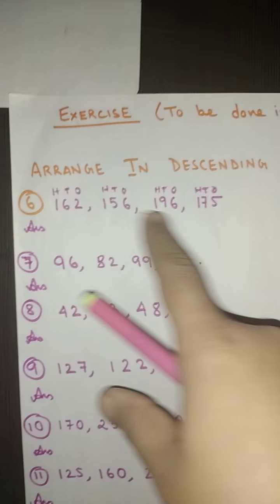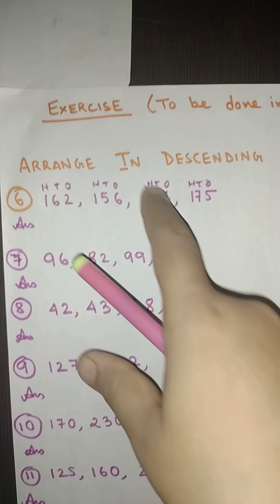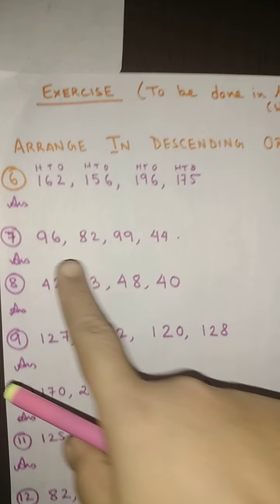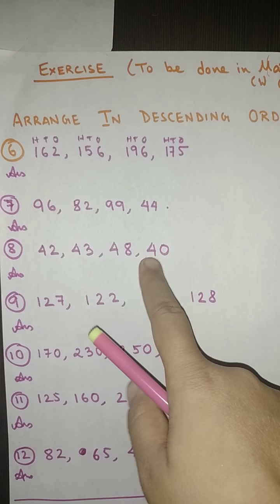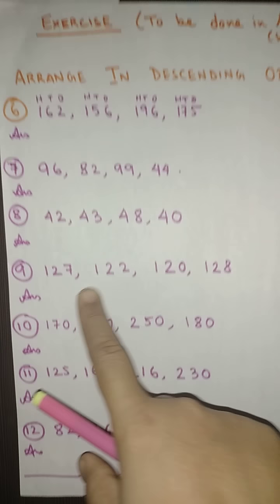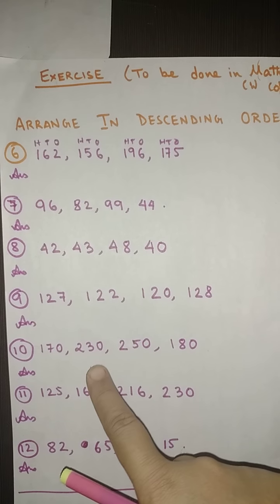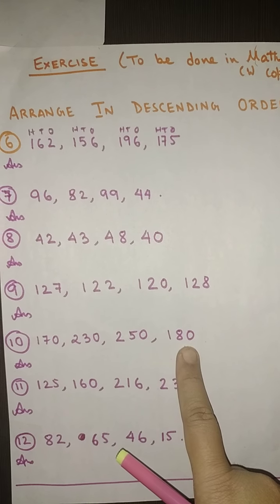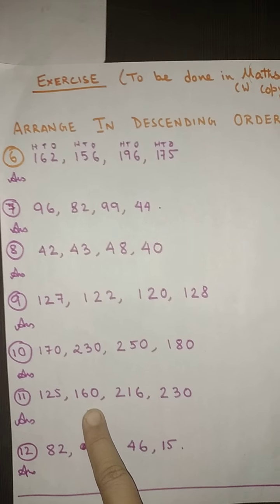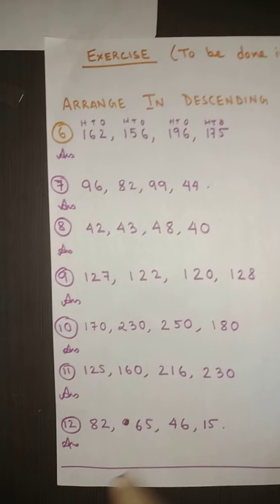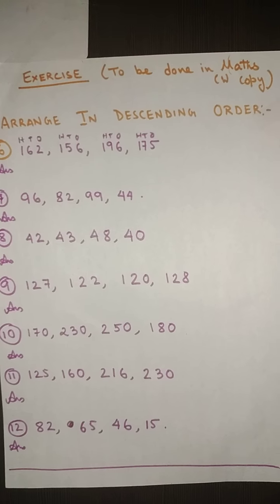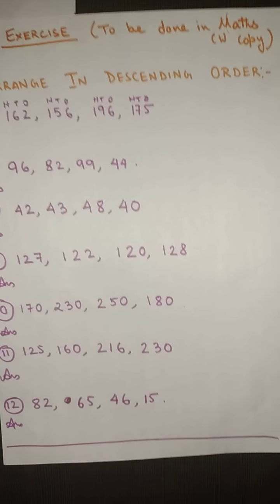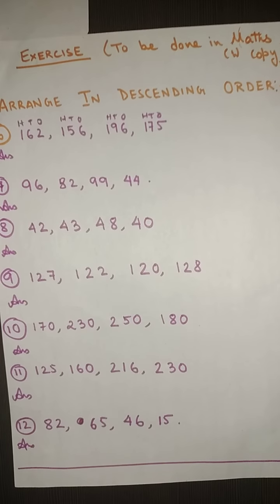Next is 96, 82, 99 and 44. Then number 8 is 42, 43, 48 and 40 — here the numbers in the tens are all same so compare the ones place. Next is 127, 122, 120 and 128. Number 10 is 170, 230, 250 and 180. Number 11 is 125, 160, 260 and 216. Then 230, and lastly 82, 65, 46 and 15. Students, do this exercise and I hope you will be able to do it by yourself. I will give the answers in the group so you can check. Keep practicing. Rama Shivaya!